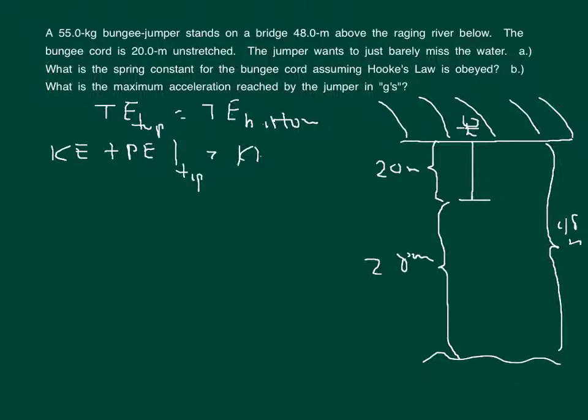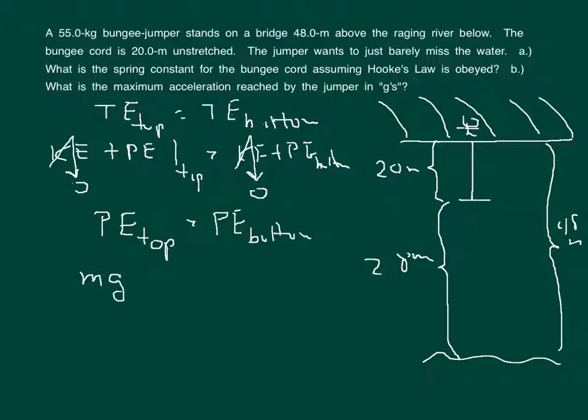So here is kinetic plus potential energy at the top, here is kinetic plus potential energy at the bottom. If we notice, when we start, the kinetic energy at the top is zero because he's not moving. Similarly, at the bottom the kinetic energy right at the very bottom is also zero. So we're left with the fact that the potential energy at the top is equal to the potential energy at the bottom. The potential energy at the top is mgh, which h would of course just be the total height.